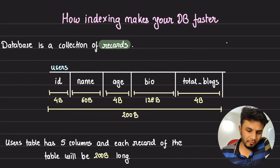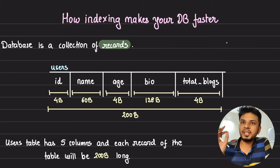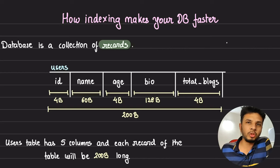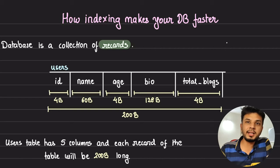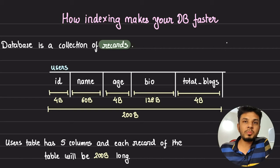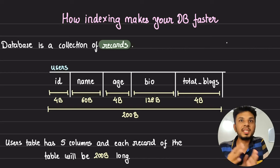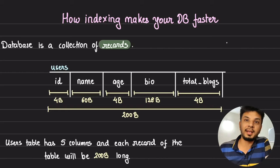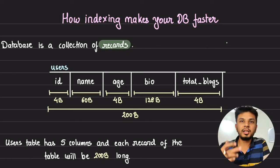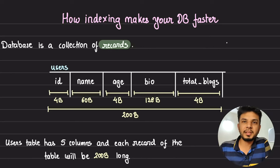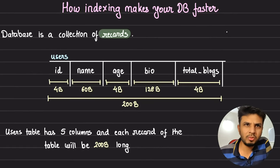A database, very simply put, is just a collection of records. If it's a SQL thing, it could be a collection of rows grouped into tables. If it's MongoDB or a document-based database, it would be a collection of JSON documents. All of those documents need to be serialized and then stored onto the disk. Let's take an example of a SQL database.